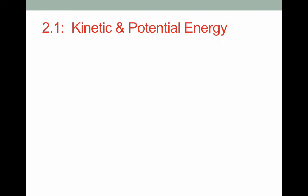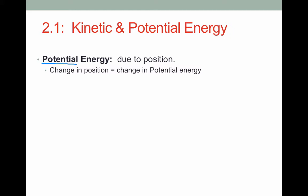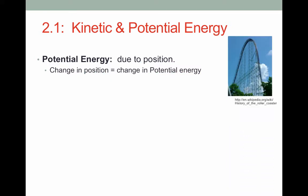We often differentiate between kinetic and potential energy to help us understand the ways in which energy manifests itself. Potential energy is energy due to position. Any time you have a change in position, you will have a change in potential energy. Take for example a roller coaster. A car at the bottom of the roller coaster has a different potential energy than a car at the top of the roller coaster. The position has changed, therefore the potential energy has changed.